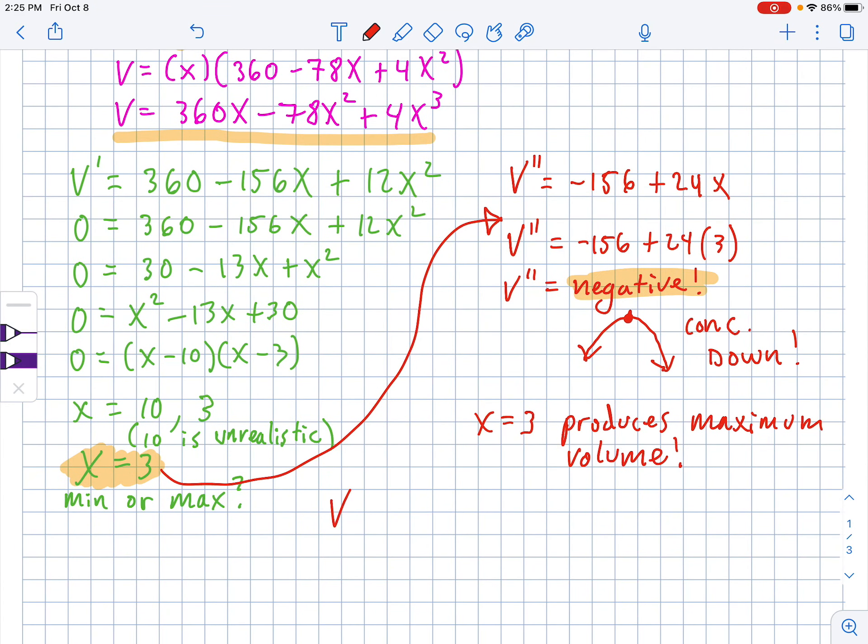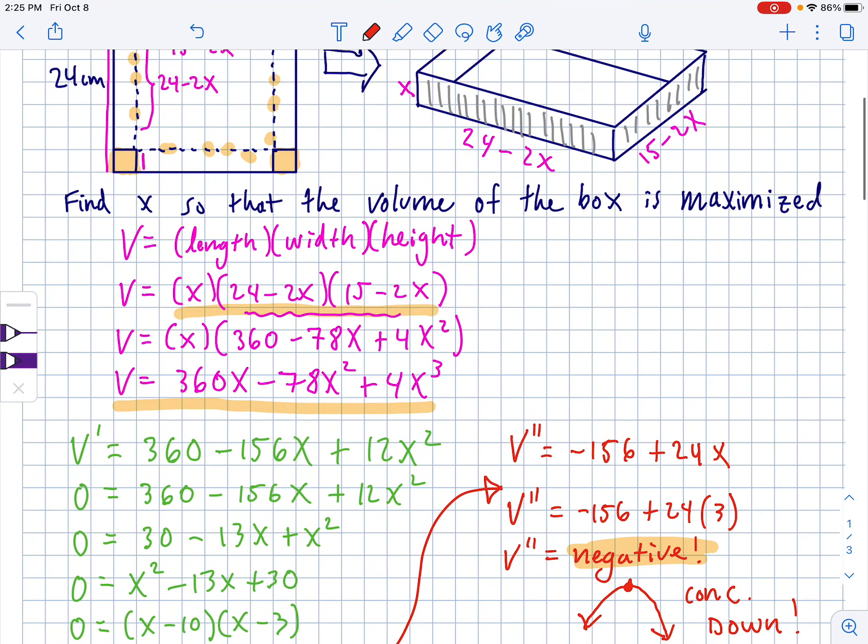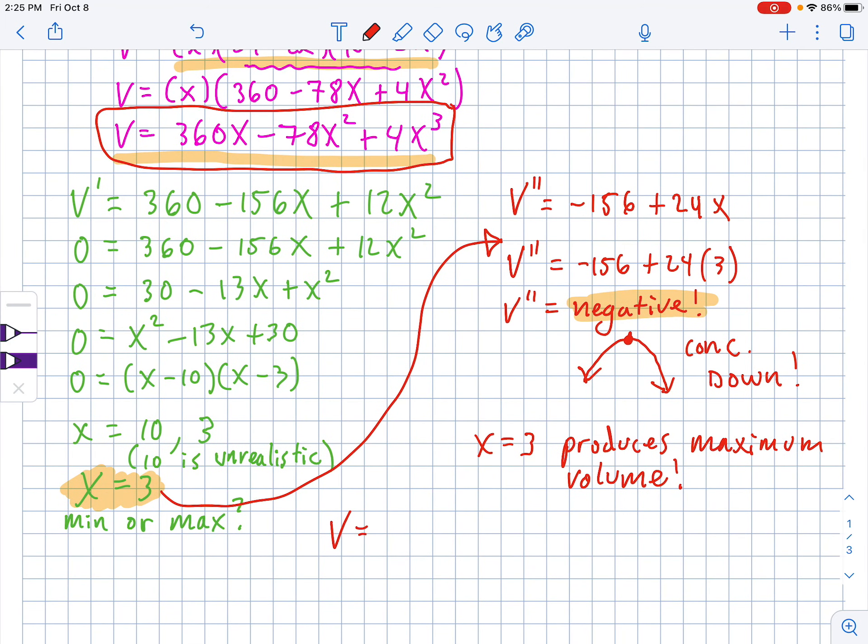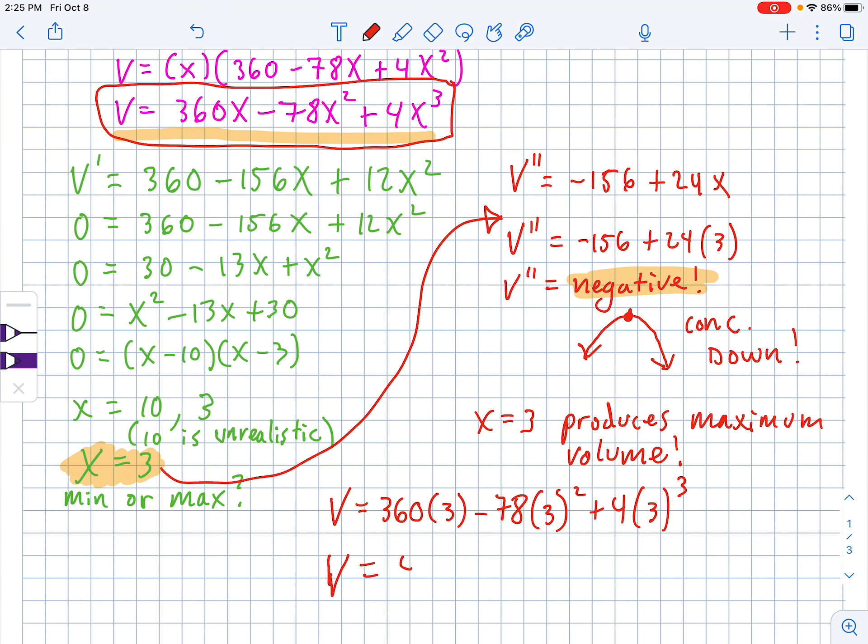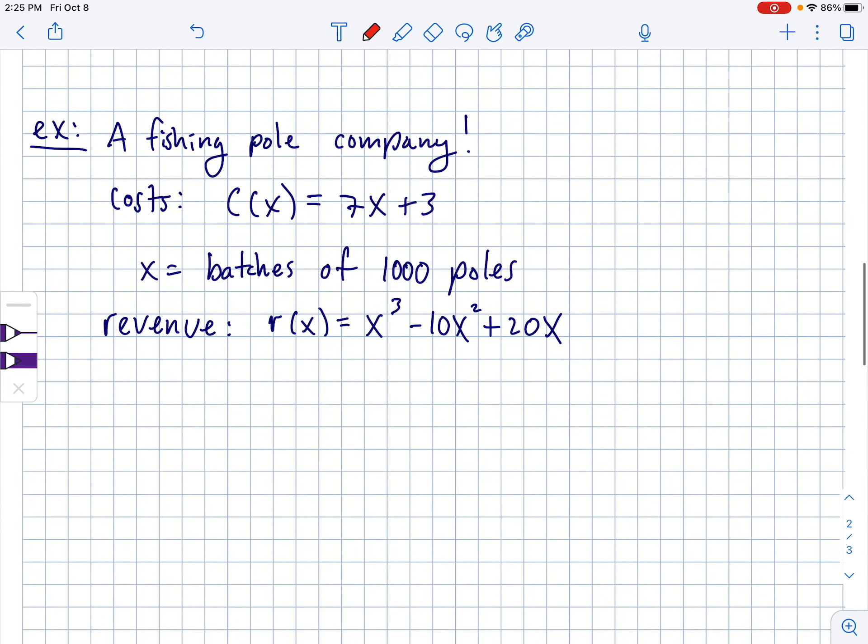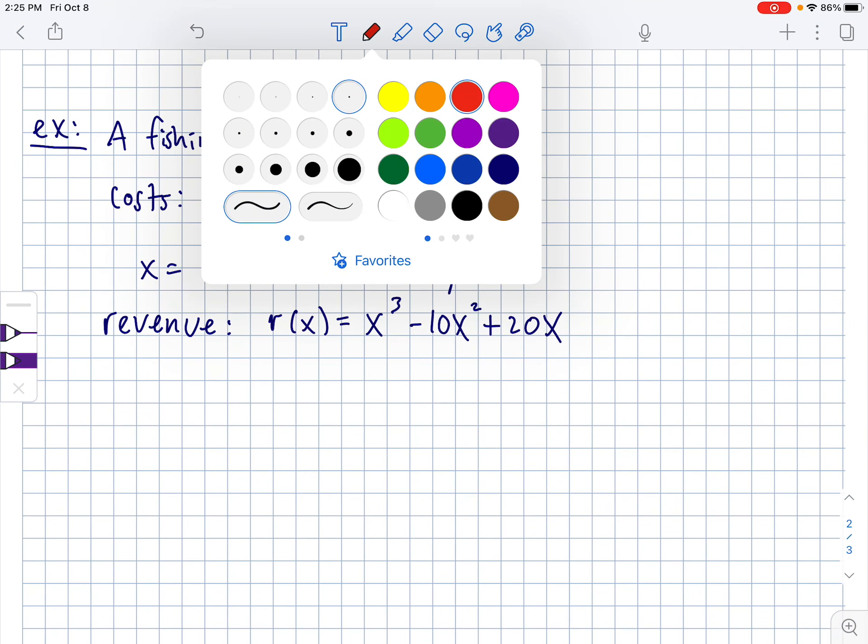Remember that if that second derivative had been positive right here, that would mean that you actually found a local minimum. Should we find the volume? Sure. Sounds fun. If you want to find the volume of what the actual maximum volume is, we have to go back to our original equation, which is right here. So that's 360 times 3 minus 78 times 3 squared plus 4 times 3 to the third. Yeah. 486 centimeters cubed.